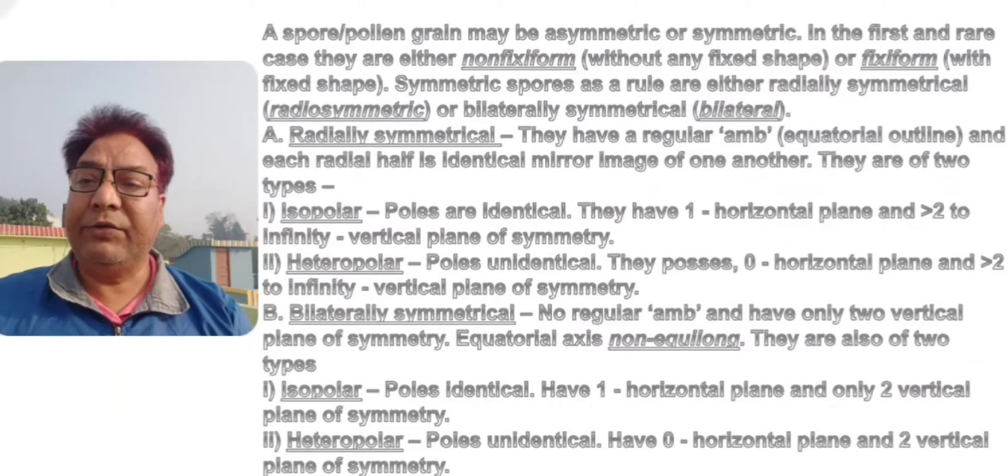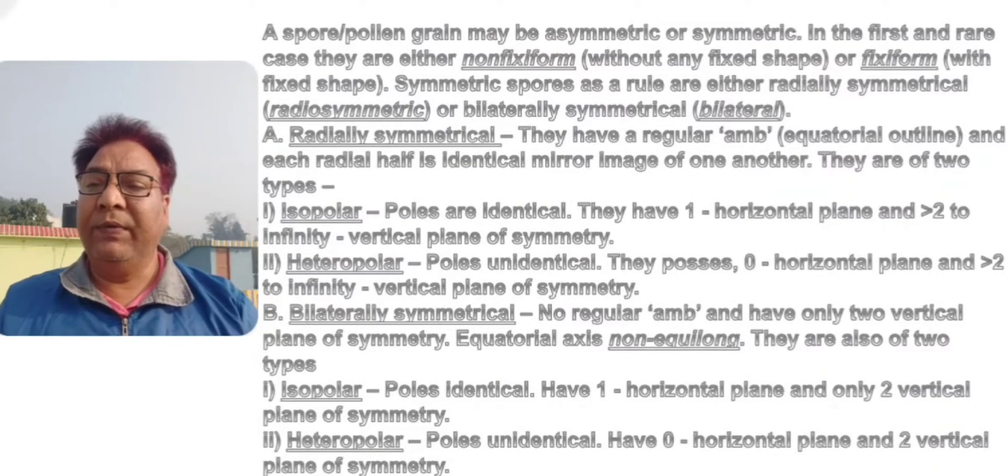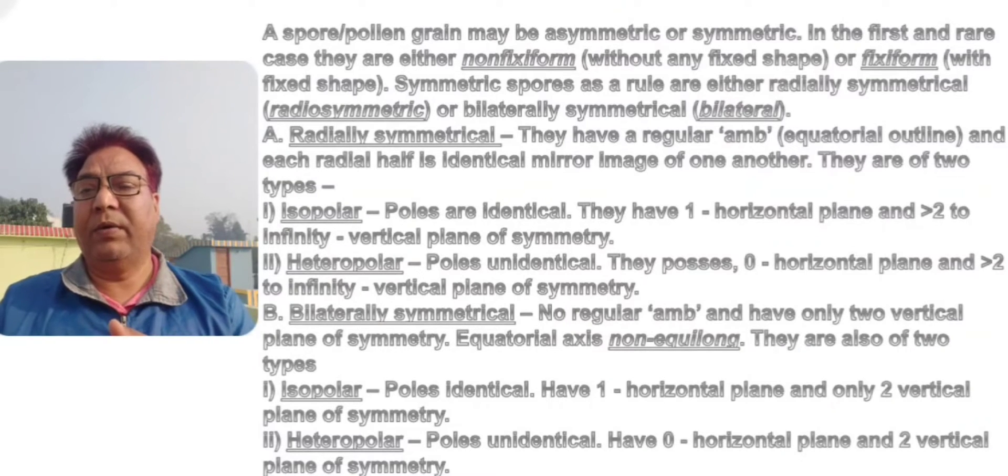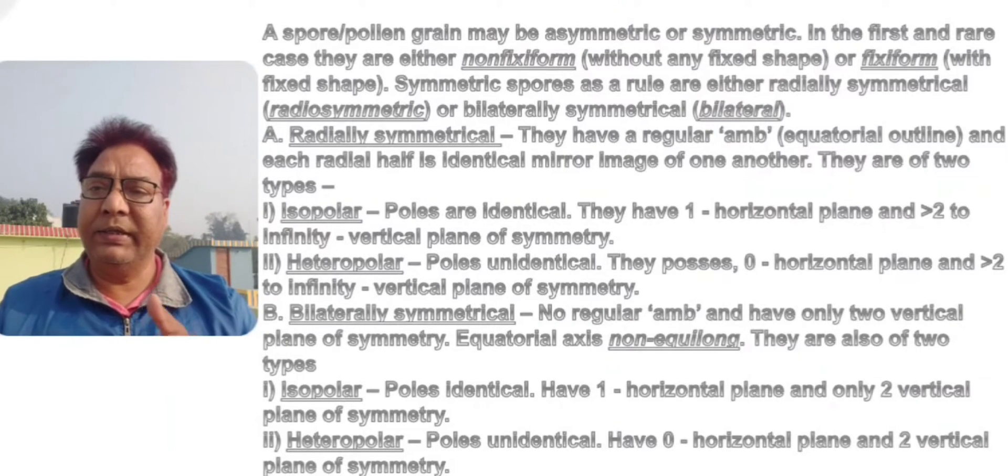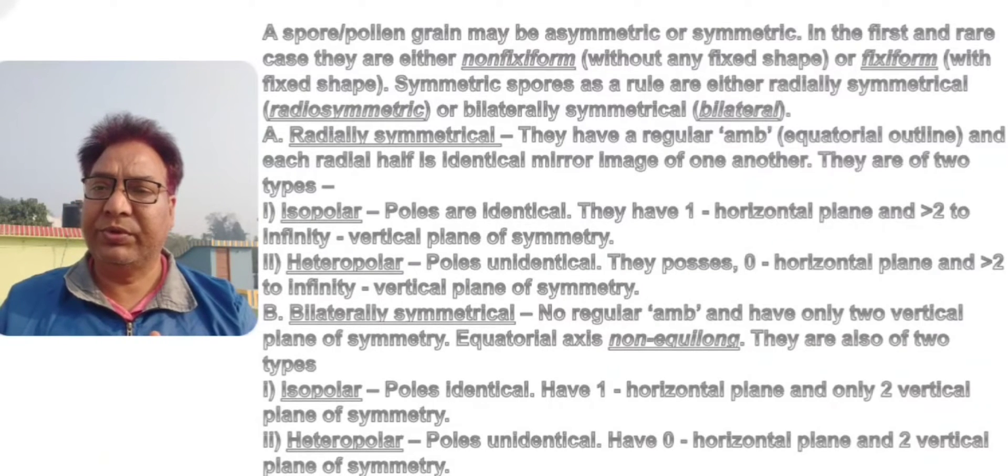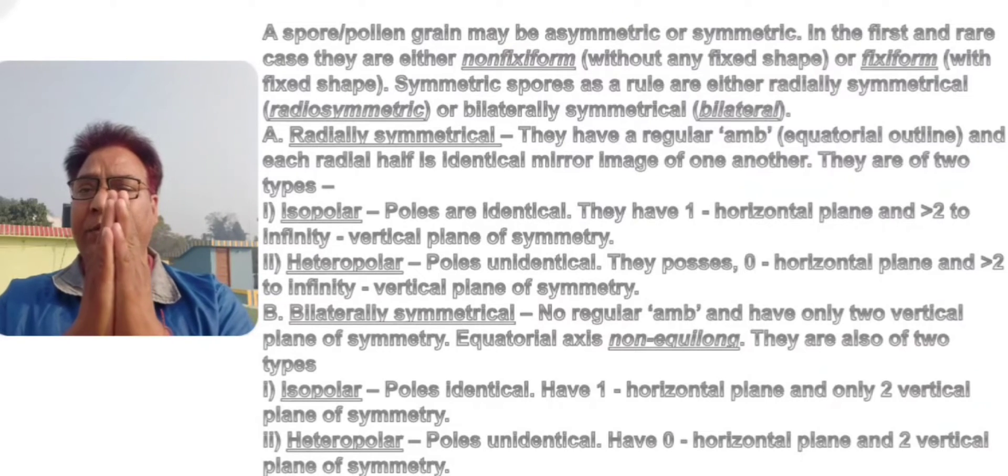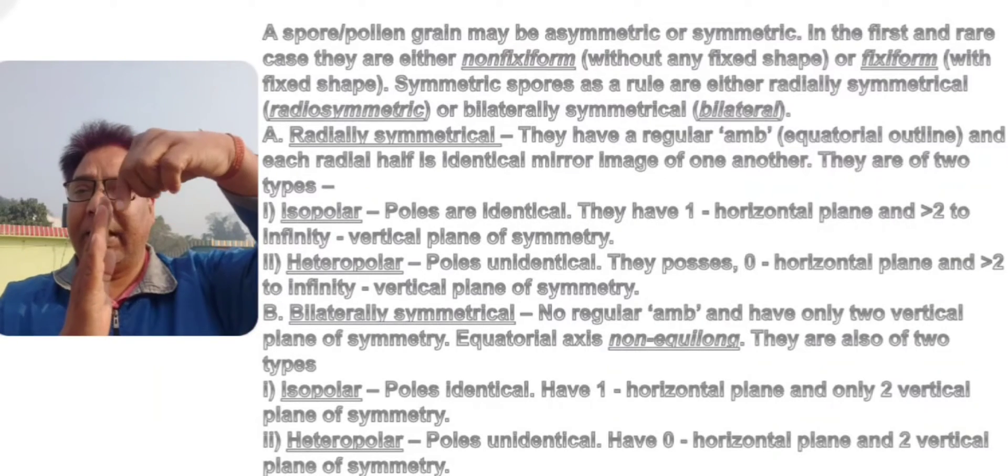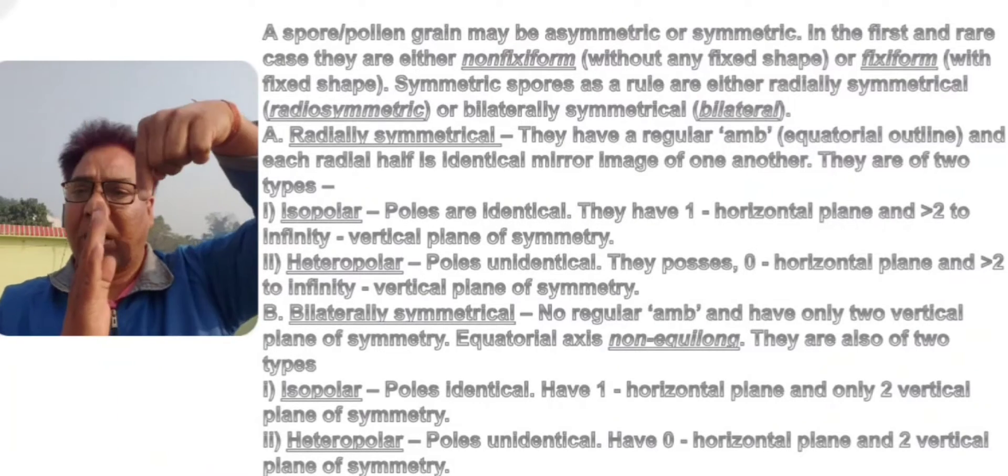Now talking about bilaterally symmetrical spores, they will have only two vertical planes of division. You can produce equal halves by cutting across the polar axis only on two planes. They are flattened, they are not round.